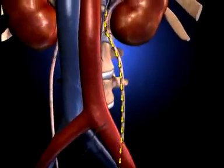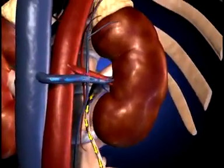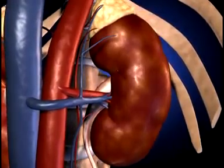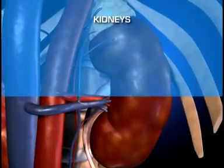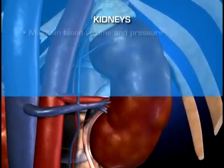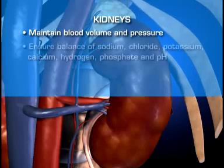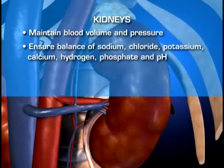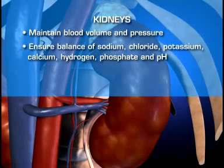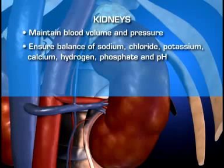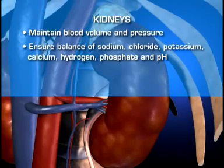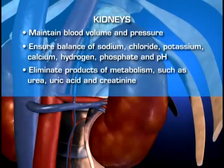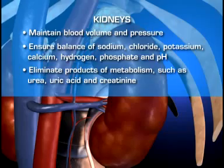The kidneys also selectively reabsorb those substances that are needed to maintain the normal composition of the blood. By adjusting blood composition, the kidneys are able to maintain blood volume and pressure, ensure the proper balance of sodium, chloride, potassium, calcium, hydrogen, phosphate, and pH, and eliminate products of metabolism such as urea, uric acid, and creatinine.